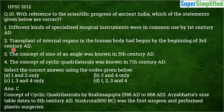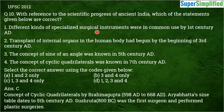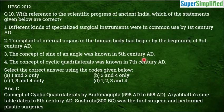Statement 2 is incorrect — we do not have evidence of internal organ transplants in ancient history in the 3rd century AD. Statement 1 is correct because surgical instruments were developed by the 1st century AD; Sushruta, the first surgeon of India, performed plastic surgeries and lived around 800 BC. Statement 3 is correct — the sine table was developed in the 5th century AD. Statement 4 is also correct — the concept of cyclic quadrilaterals was known in the 7th century AD. So option C, 1, 3 and 4 only, is correct.